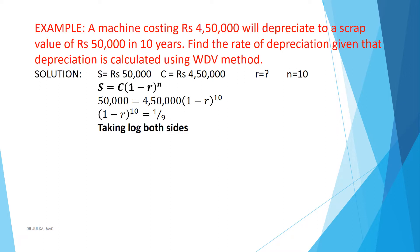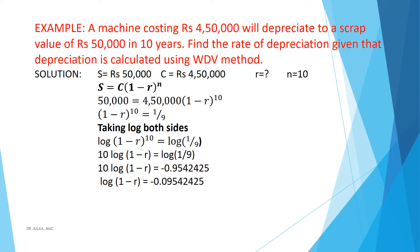Taking log on both sides: log of (1 minus R) raised to the power 10 equals log of 1 by 9. We know that log M to the power N is N log M. So 10 log(1 minus R) equals log(1 by 9). Using a simple calculator, the value of log(1 by 9) is minus 0.9542425, and dividing by 10 gives minus 0.09542425.